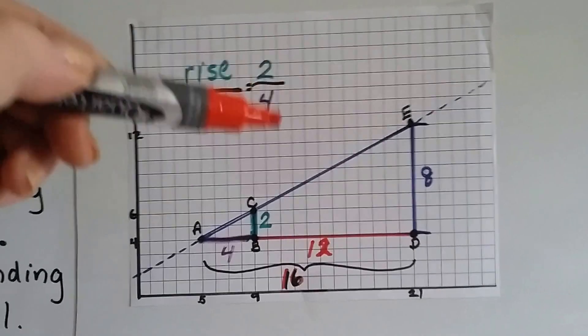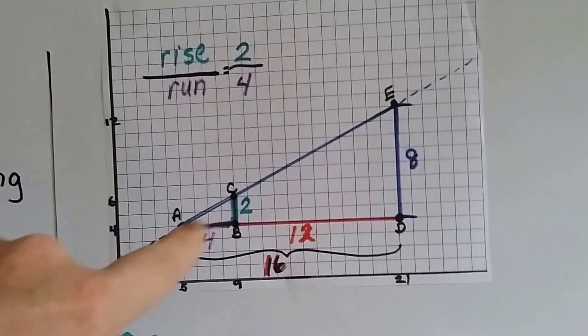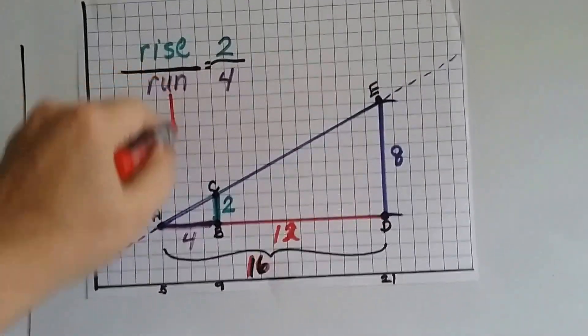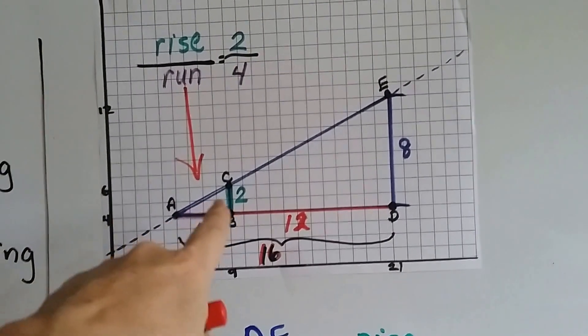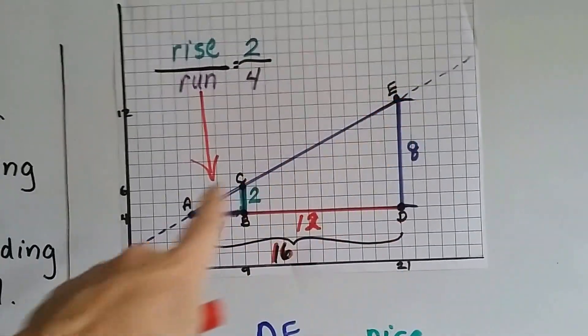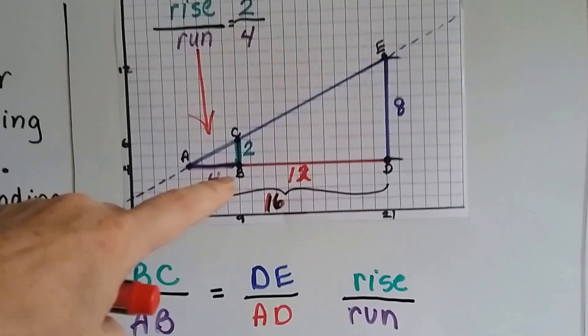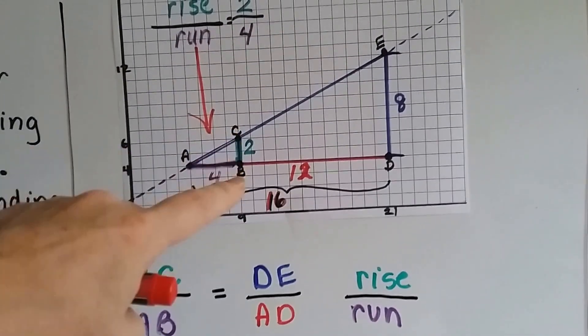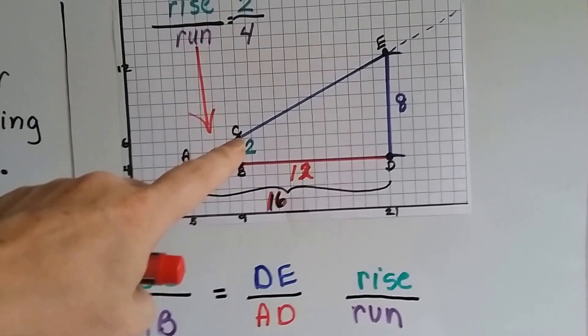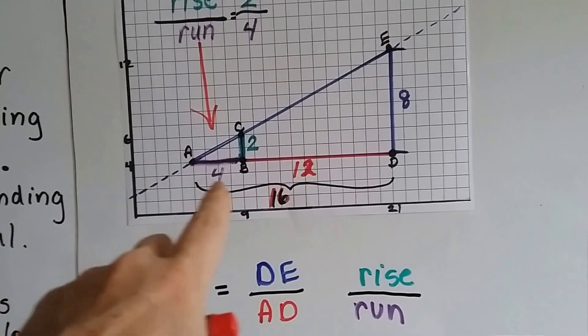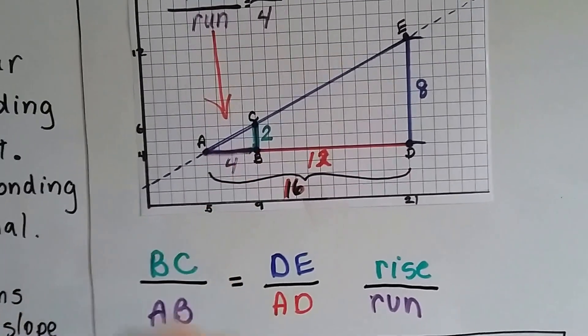Let me show you this picture. It says our rise over our run is 2 over 4, and that's for this little one right here. That's for this little triangle nestled in the vertex of this bigger triangle. We've got line BC right here, that's 2, 2 units, that's our rise. And between A and B is 4 units, that's our run.